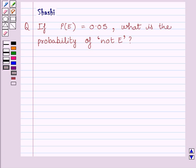Hi and welcome to the session. Let us discuss the following question. Question says, if probability of E is equal to 0.05, what is the probability of not E?